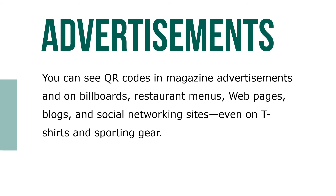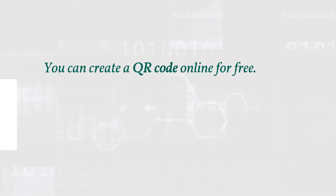You can see QR codes in magazine advertisements, on billboards, restaurant menus, webpages, blogs, social networking sites, and even on t-shirts and sporting gear. You can create a QR code for free online. One way would be to use the Google URL shortener, which automatically creates a QR code for a webpage each time a URL is shortened.